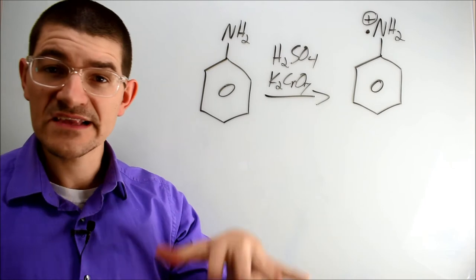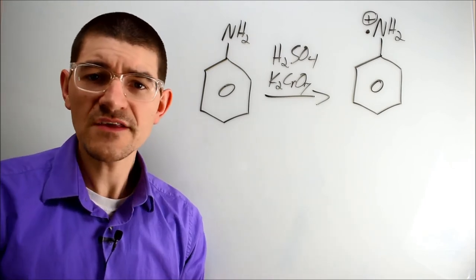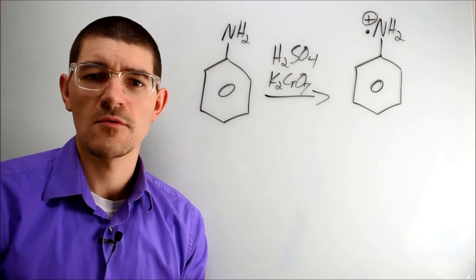This radical cation then attacks virgin aniline, ortho-toluidine, and para-toluidine in whatever given ratios and steps it has to create the various compounds in our mauveine soup. Mauveine A, mauveine B, etc.